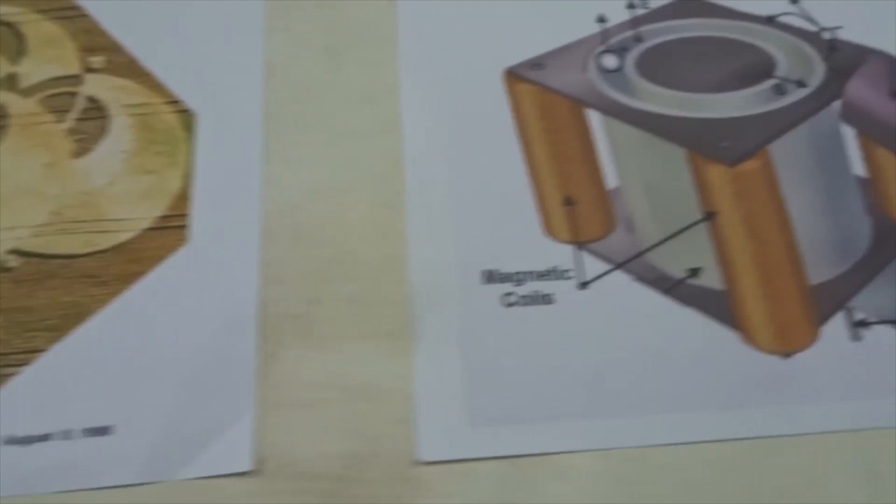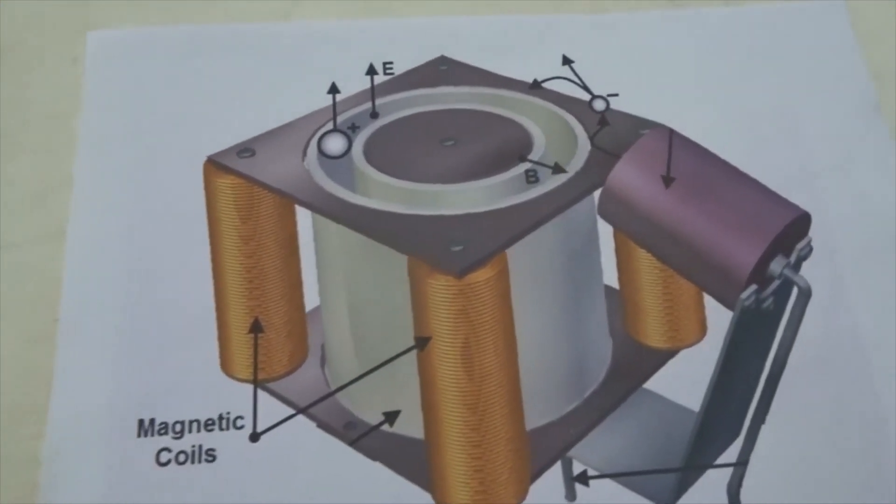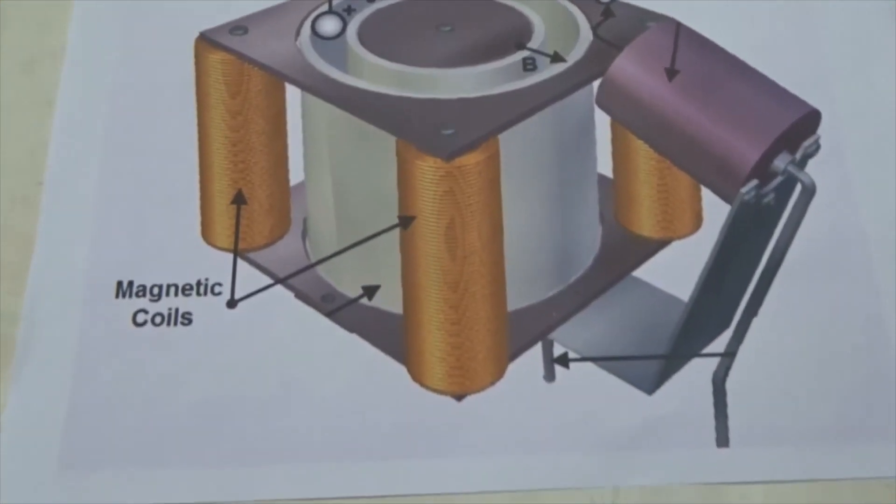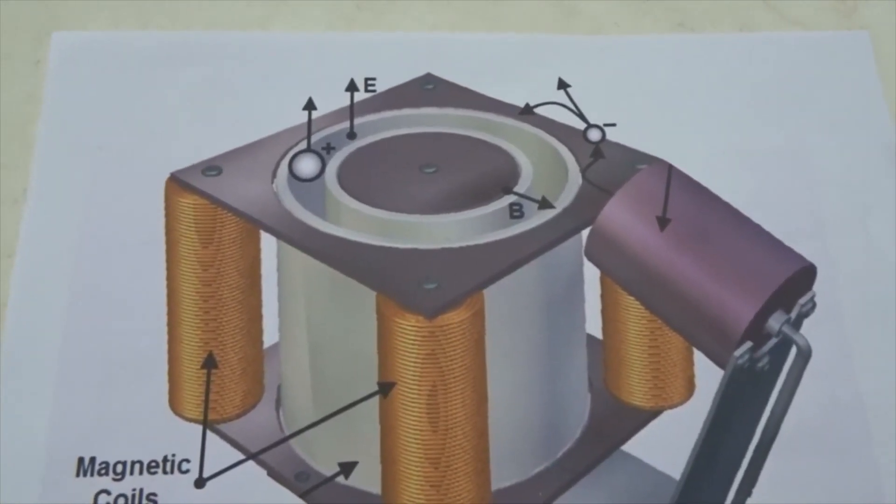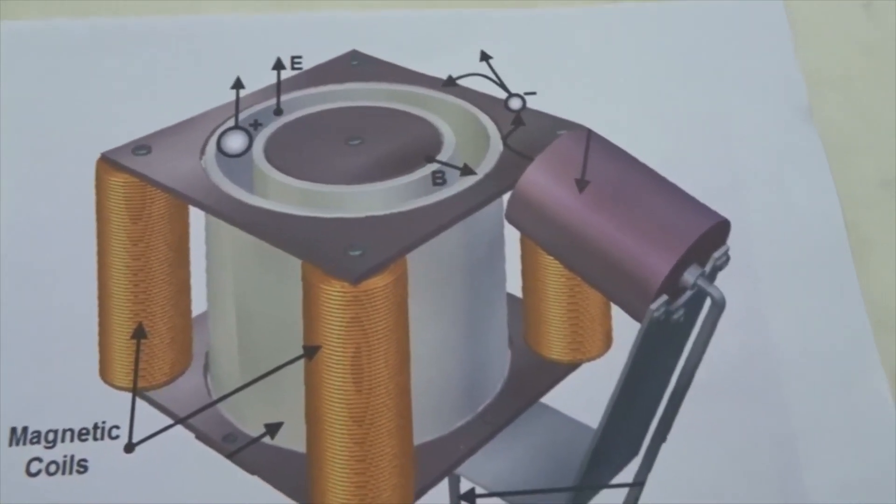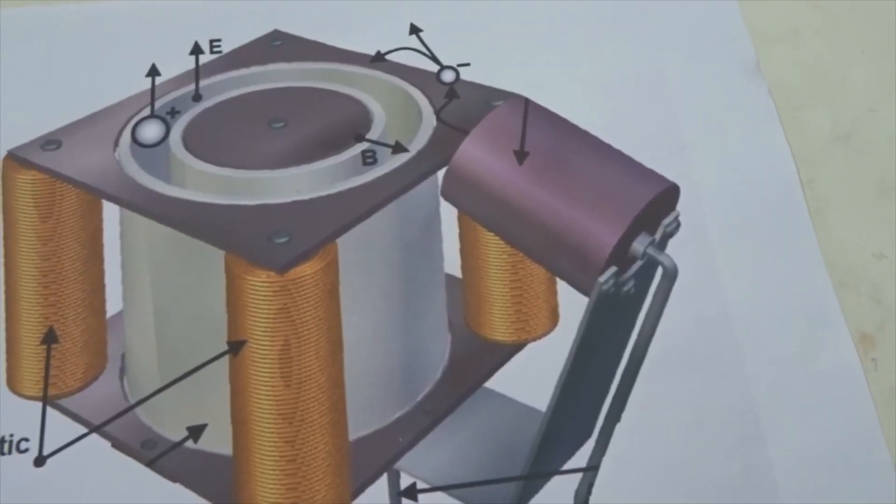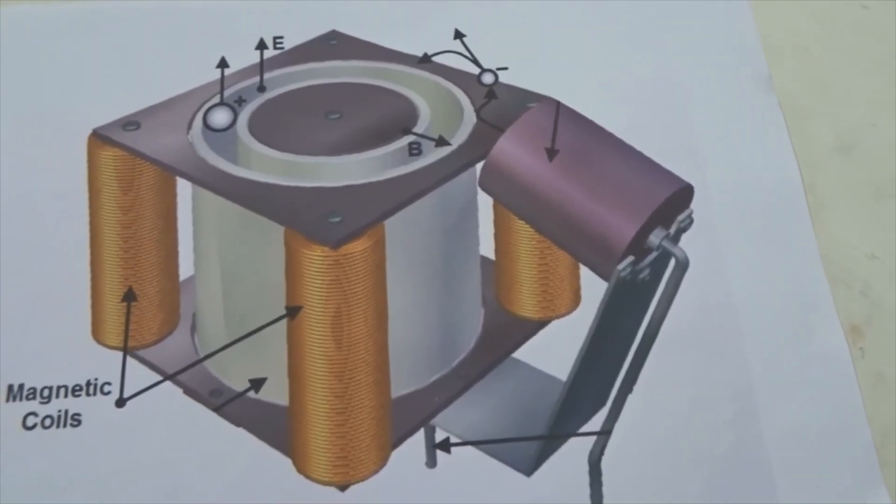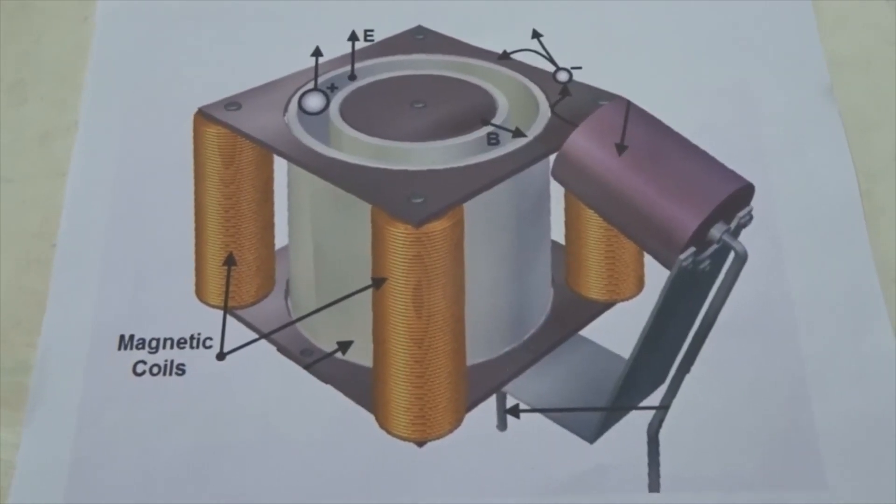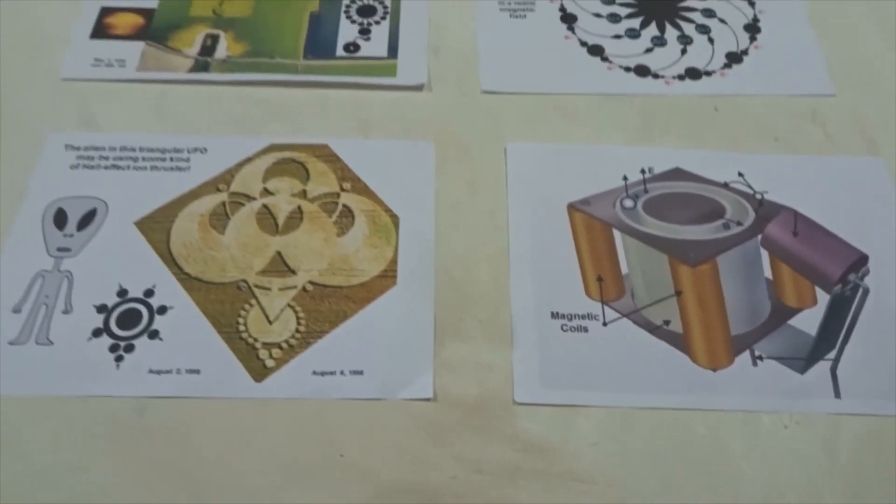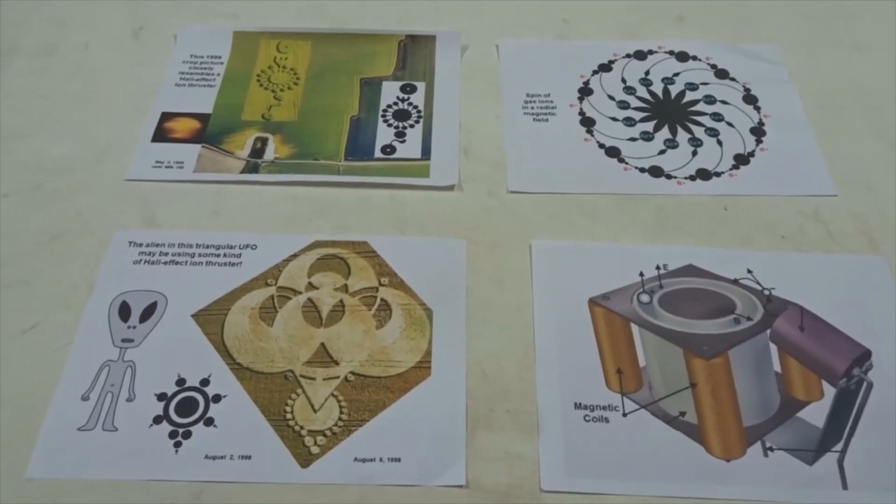And this is the Hall effect thruster, which is the closest NASA has to this ion drive. You can see wire coils around the outside and an annulus where the argon ions go. The difference is we're not using this thermionic emitter, we're using 40 kV DC power instead, which makes it easier to scale up. So we're clearly on the right track. We'll continue and see what happens.